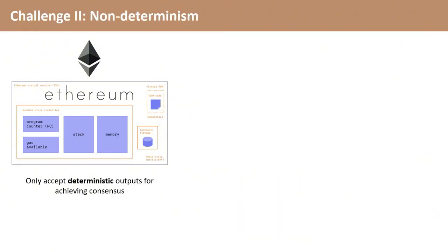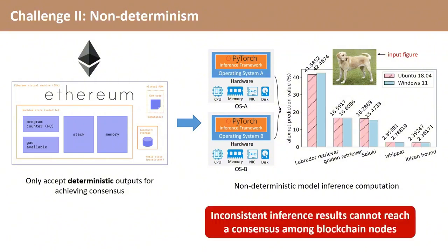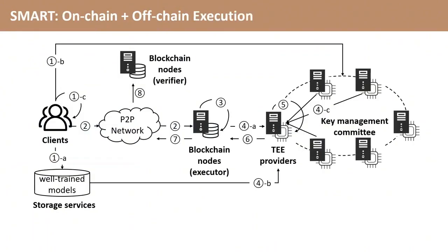What's more, smart contracts should accept deterministic code for achieving consensus. However, AI model inference outputs are typically non-deterministic due to multiple factors. Thus, the inconsistent inference results cannot reach a consensus among blockchain nodes.